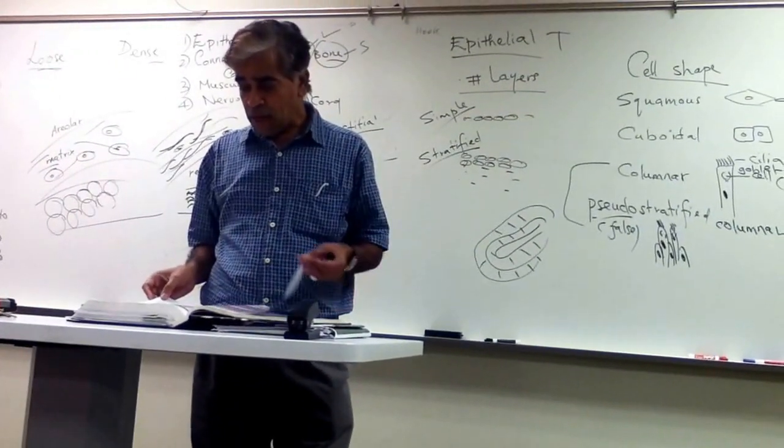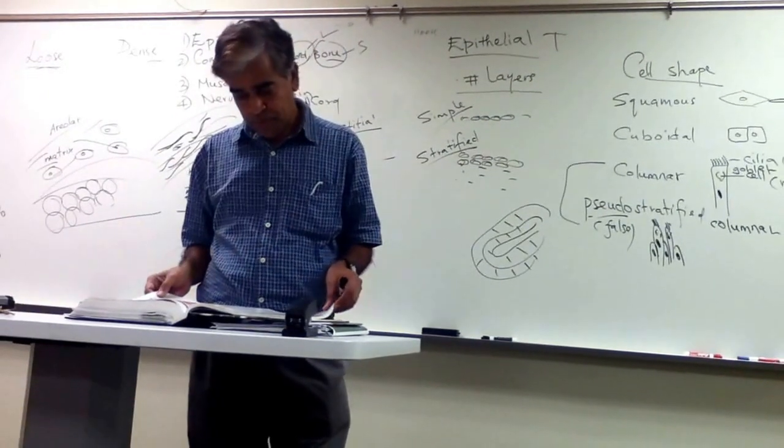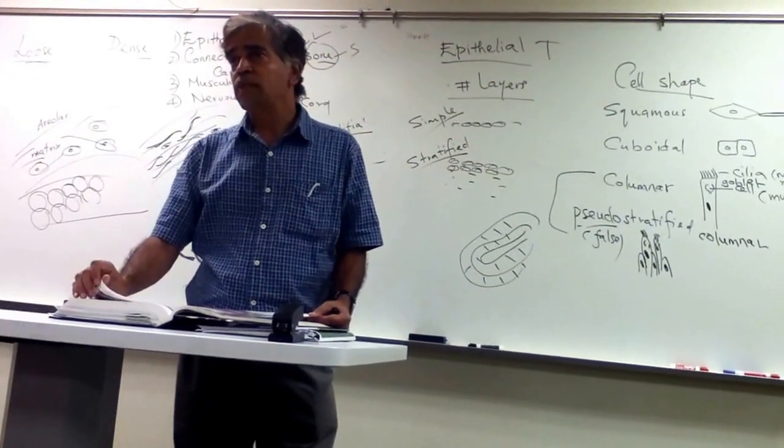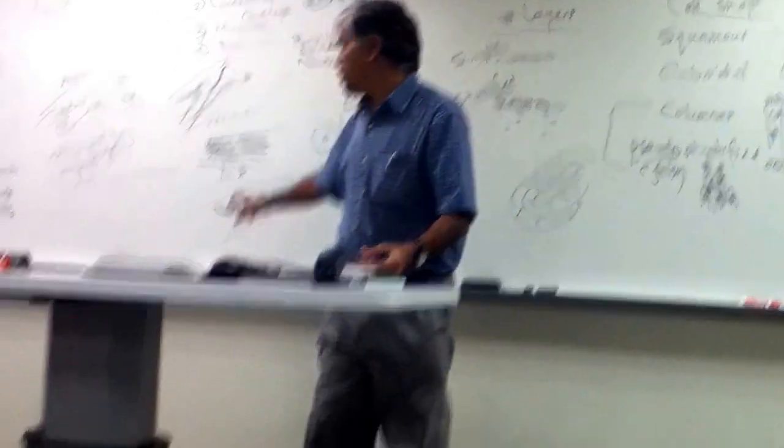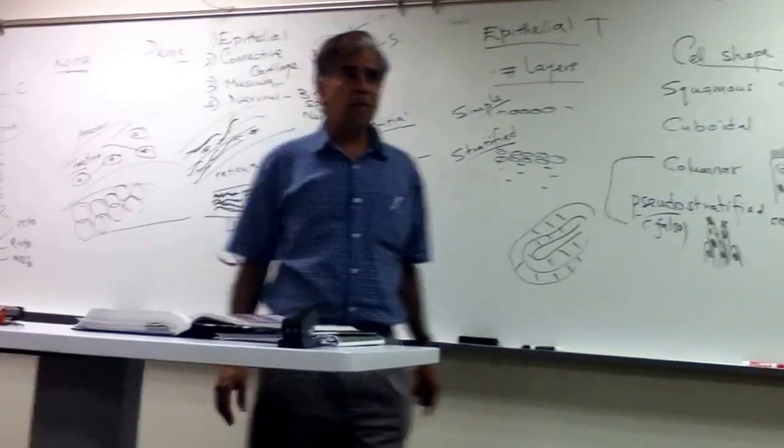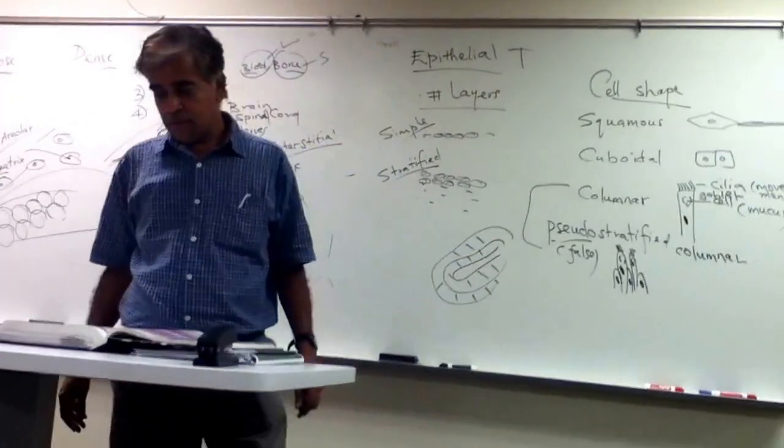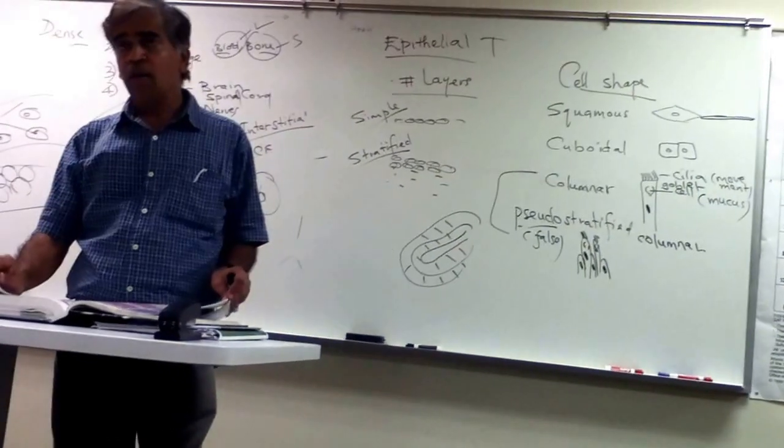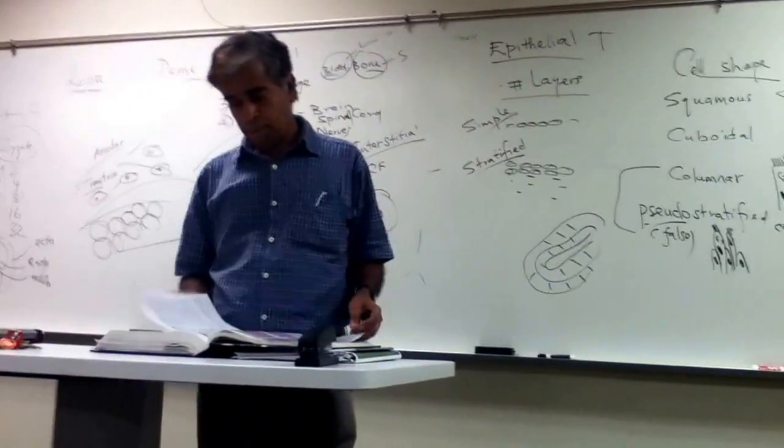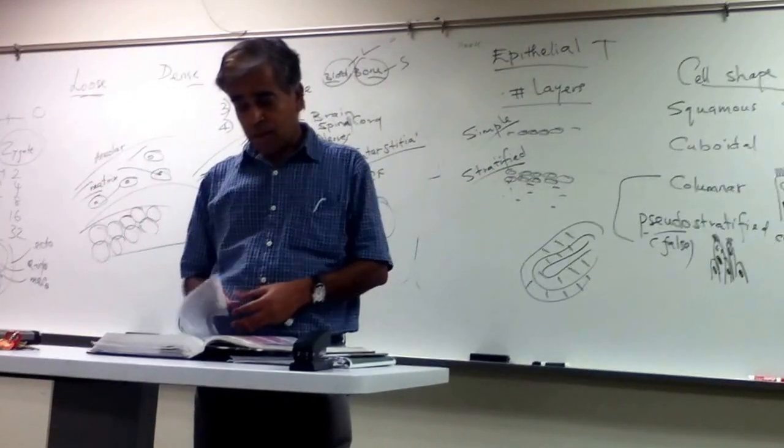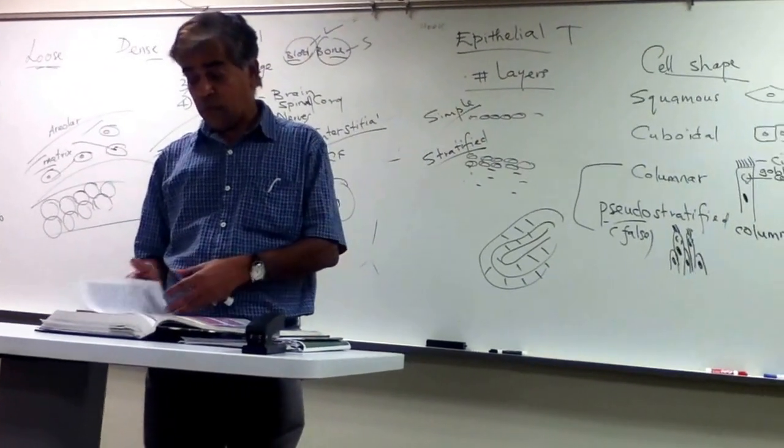Then you have adipose tissue. Adipose tissue is your fat tissue that's made up of just the cells. Like in this case, you don't see the background at all. Or maybe very little. And the cells of the adipose tissue, they call them adipocytes. And we are going to stop there.